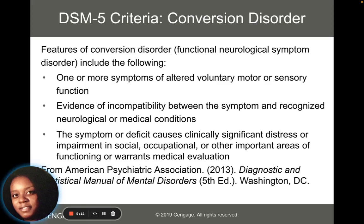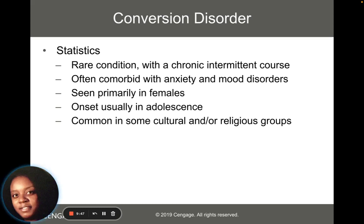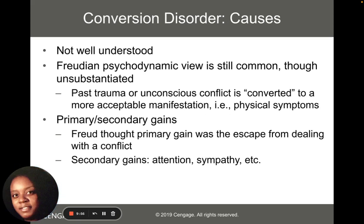The diagnostic criteria for conversion disorder according to the DSM-5 mainly involve motor or sensory functioning that is not happening. Statistically, it's very rare and can have a chronic intermittent course. It can often become comorbid with anxiety and mood disorders, because frequently the reason a person experiences a conversion disorder is how their anxiety manifests itself. It's also seen primarily in females. Onset can usually be in adolescence, and there are some common cultural and religious groups that could have conversion disorders as well.